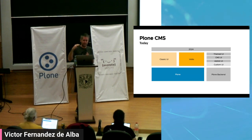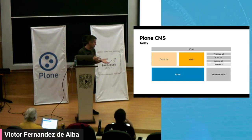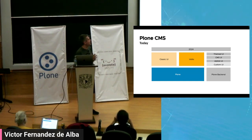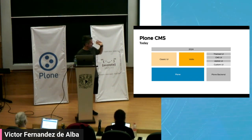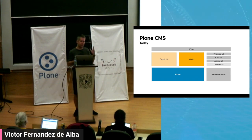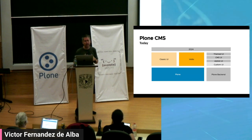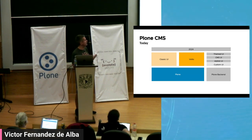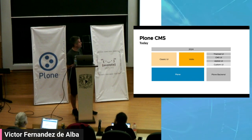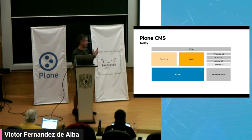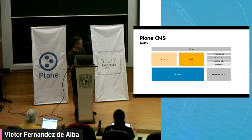So we have a Plum backend where we store our content, content types, custom code, and custom content types. We then have the default theme UI, the CMS UI and the admin UI that Plum provides in both Classic and Volto, and over this default UI you provide your own custom UI — your own custom look and feel for every project and client, to give a personalized look and feel to sites or intranets, whatever you are building.